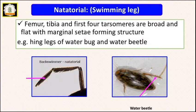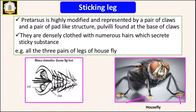Next is natatorial or swimming legs. These legs pertain to swimming. In this type, the femur, tibia, and the first four tarsomeres are broad and flat, with cilia-like projections on them. For example, in water bugs or water beetles, the hind legs are modified for natatorial or swimming purpose.